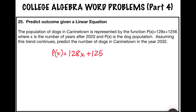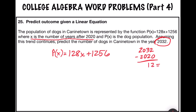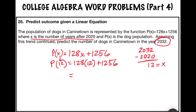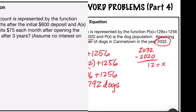We're given p(x) = 128x + 1256, where x is the number of years after 2020, and we want the prediction for 2032. First, we find how many years after 2020 that is: 2032 − 2020 = 12, so x = 12. Substituting into the function using order of operations: 128 × 12 = 1536, plus 1256 gives us 2792. In the year 2032, there will be 2792 dogs in Canine Town.